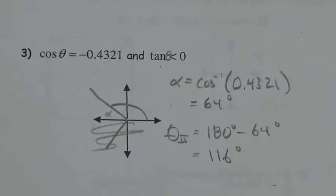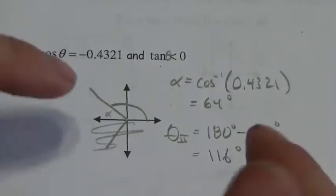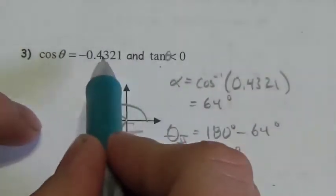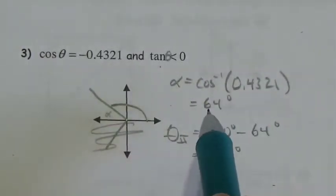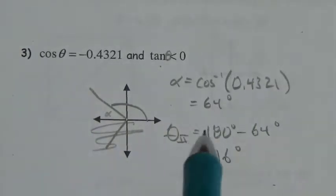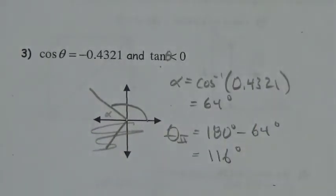So that's the procedure: determine what quadrants you're in — use the negative sign to do that. Then use the size of that ratio to get the angle within the triangle. And then put that angle in the proper quadrants.